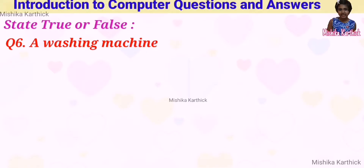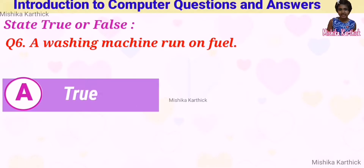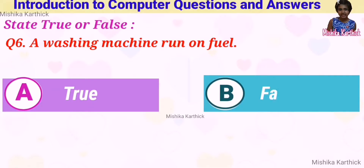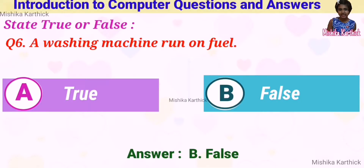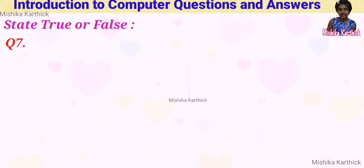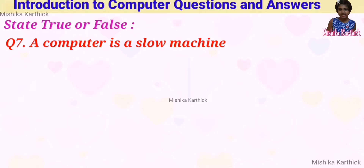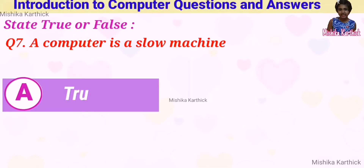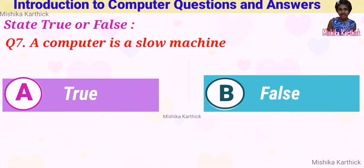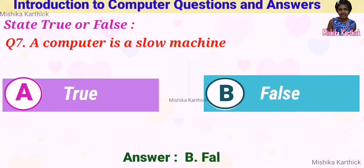Question 6: a washing machine runs on fuel. Answer: B. False. Question 7: a computer is a slow machine. Answer: B. False.